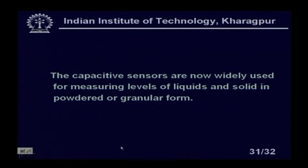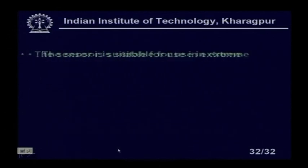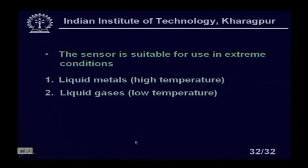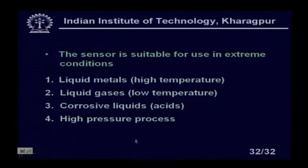Capacitive sensors are widely used for measuring levels of liquids and solids in powder or granular form. They are suitable for extreme conditions: liquid metals at high temperatures, low temperature gases, and corrosive liquids like acids and caustics where other sensors fail. For a stainless steel container with corrosive liquid, capacitive sensors work well. They also work in high pressure processes where other sensors fail, as they are totally independent of the pressure of the liquid.